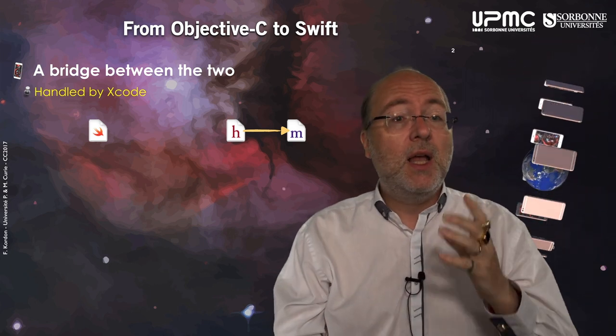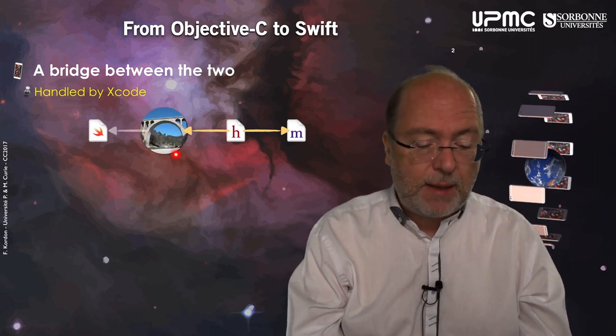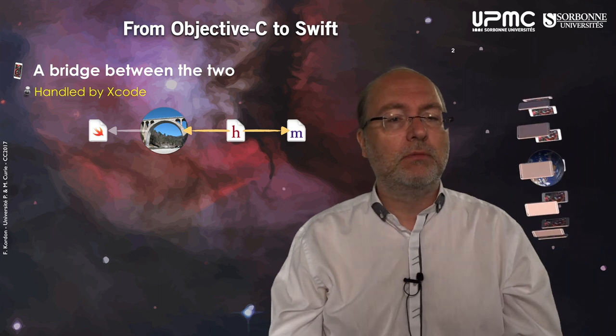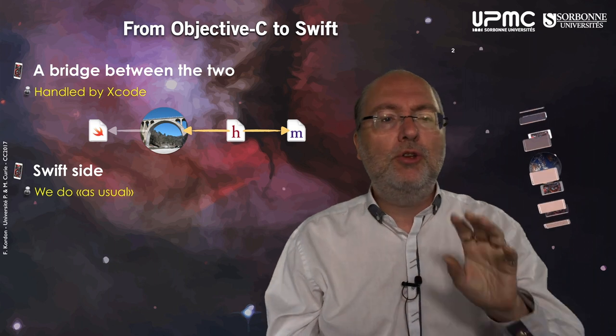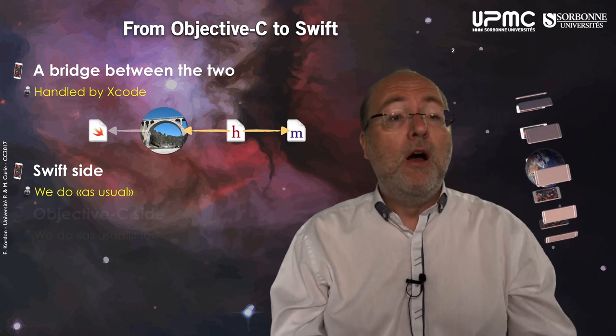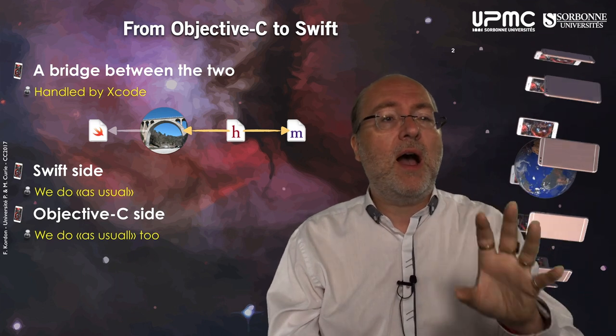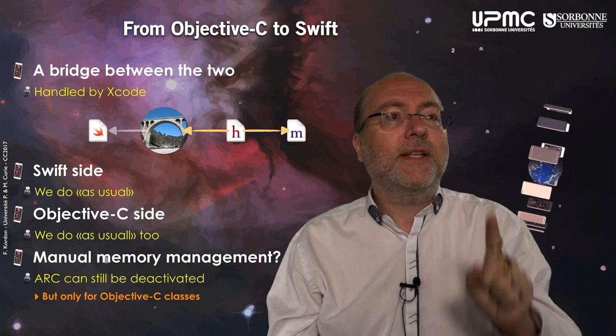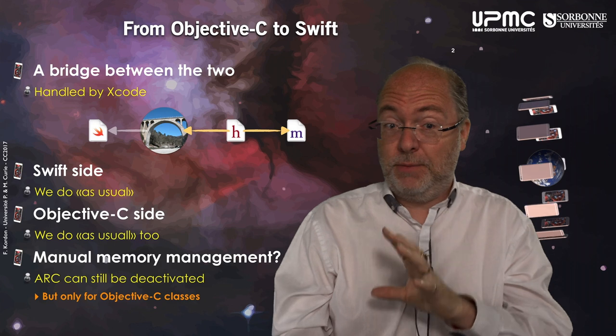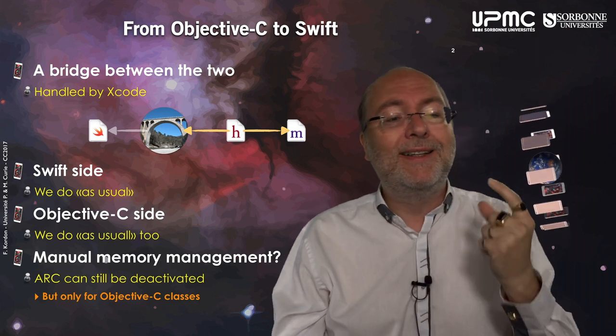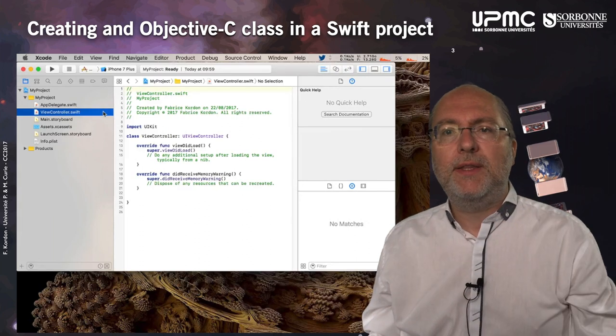Once you have established this bridge, you have nothing to do. From the Swift side you program as usual, from the Objective-C side you program as usual, and you can even have manual memory management on the Objective-C classes only, of course, by deactivating ARC. Let's see how we create this bridge between Swift and Objective-C.